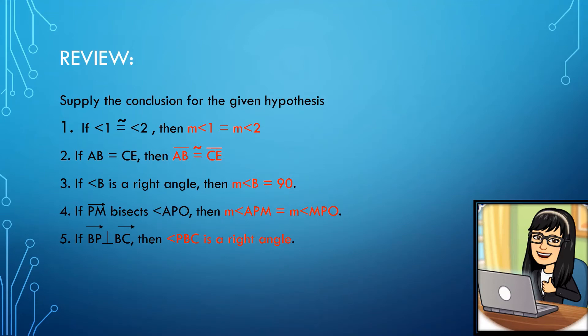Number four: ray PM bisects angle APO. From the word bisects, it divides angle APO into two congruent angles. So your conclusion would be: measure angle APM is equal to measure angle MPO. Number five: ray BP is perpendicular to ray BC. From the concept of perpendicular lines — these are intersecting lines that form a right angle — therefore, angle PBC, where B is the vertex, is a right angle.